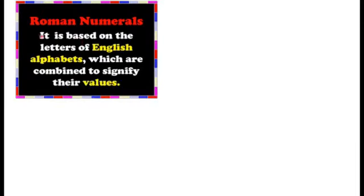Any symbol can be repeated only three times maximum. V equals 5, L equals 50, and D equals 500 — we don't repeat these three alphabets and we don't subtract them from any other alphabet. The next rule says: when a smaller numeral is written between two large numerals, it is always subtracted from the large numeral just after it. We will be discussing all these rules one by one with examples.